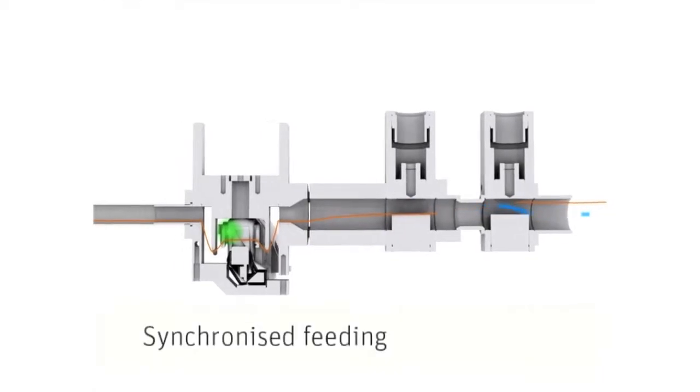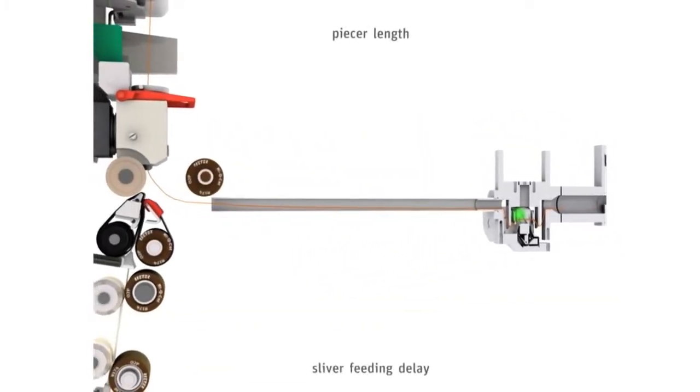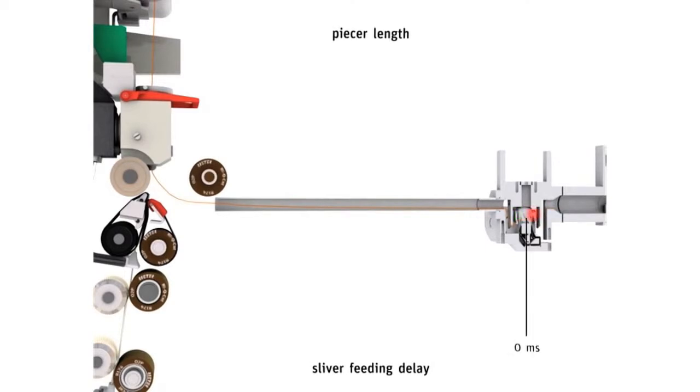The feeding of yarn end and new fibers is fully electronically controlled and adjustable. The release of the yarn end triggers the feeding. Setting a variable delay allows the customer to optimize the piecer length.